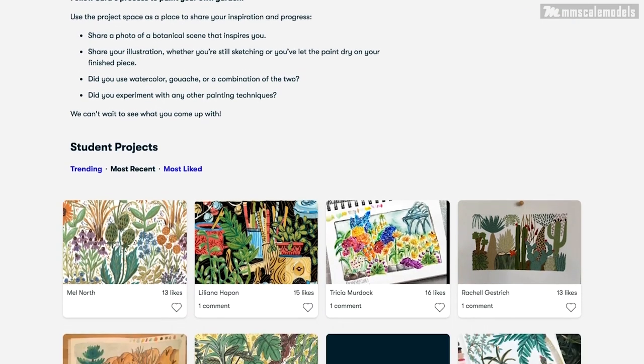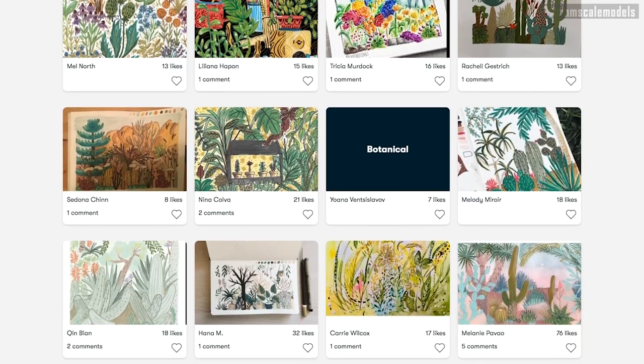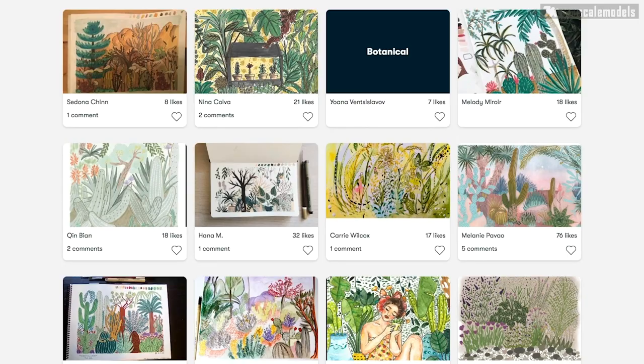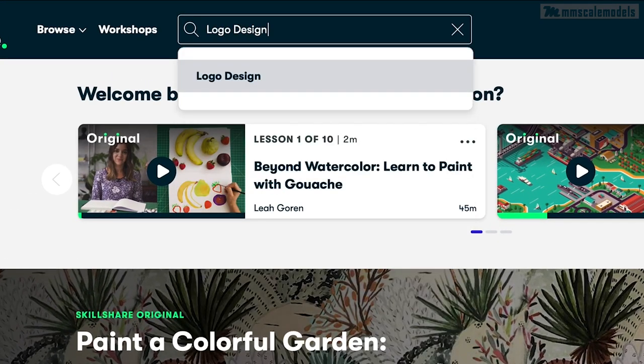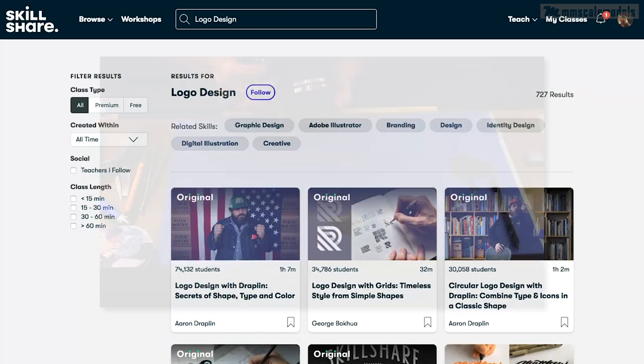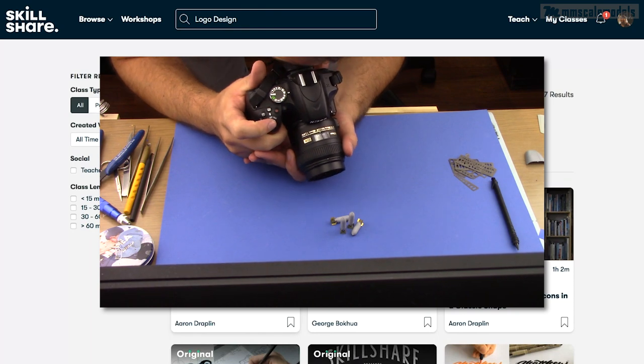My personal favorite so far is the fundamentals of DSLR photography by Justin Bridges. The way that he explains how to balance the exposure triangle is super easy to understand. And I am sure this class will help me to improve the quality of my scale modeling photography.